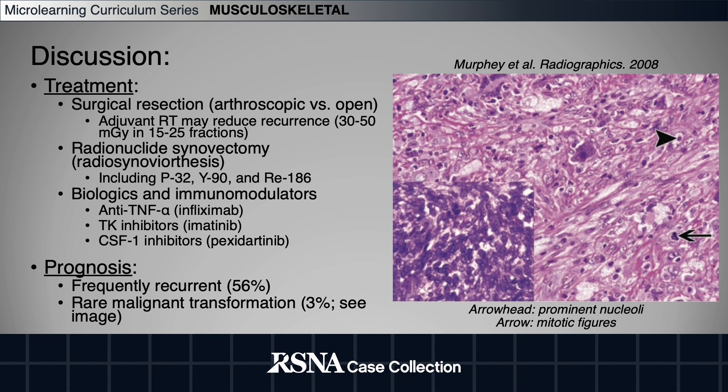Treatment modalities may include surgical resection with or without adjuvant radiotherapy, which has been shown to reduce the rate of recurrence. More recent advances in radionuclide synovectomy, also known as radiosynoviorthesis, have allowed for a minimally invasive alternative using P-32, Y-90, or rhenium-186.